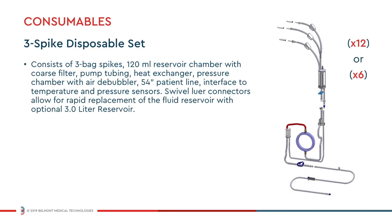The Belmont 3-Spike Disposable Set contains everything you need for a procedure and is the only consumable required to operate the Rapid Infuser at its full range of flow rates. The Disposable Set consists of three bag spikes, a heat exchanger, a 54-inch patient line, and a 120-milliliter coarse blood filter reservoir. Quick connections below the reservoir allow for easy and rapid replacement with the optional 3-liter reservoir.